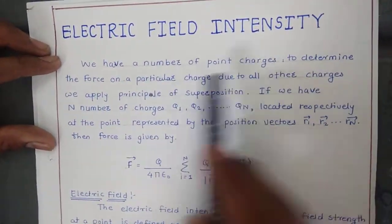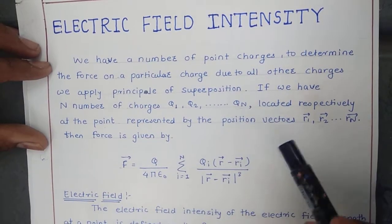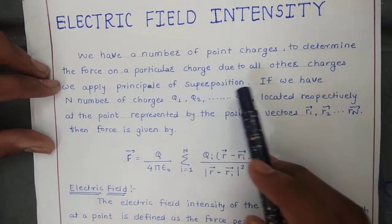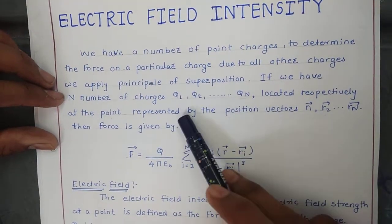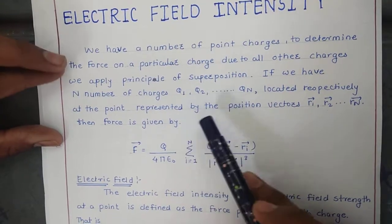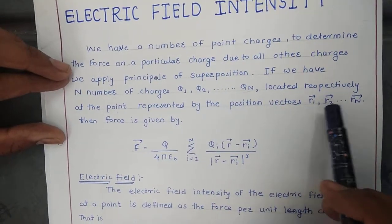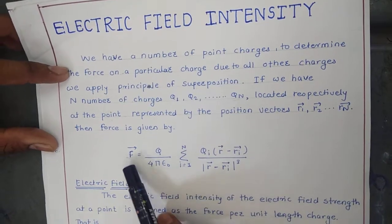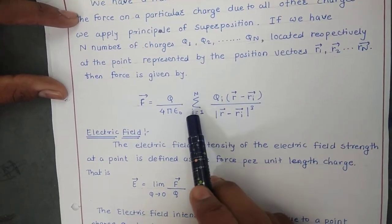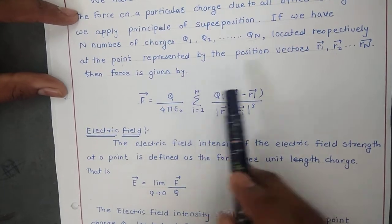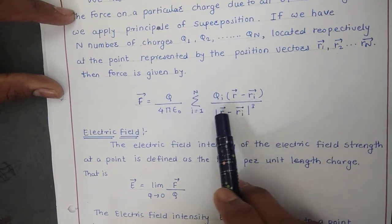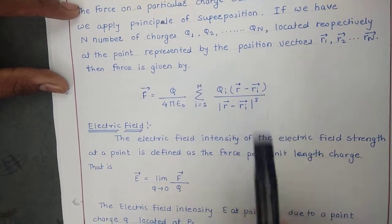We have a number of point charges to determine the force on a particular charge due to all other charges. We apply the principle of superposition. If we have n number of charges Q1, Q2, Qn, located respectively at points represented by position vectors R1, R2, and Rn, then the force is given by F equal to Q upon 4pi epsilon-0, summation i equal to 1 to n, into Qi times (R minus Ri) upon (R minus Ri) cubed.